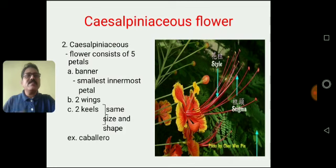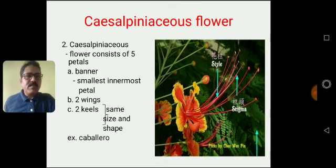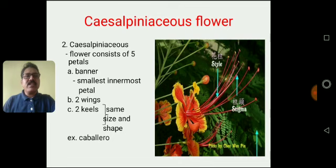The Caesalpiniaceous flower has a structure as shown in this figure. Caesalpinia pulcherrima is an example of this flower, having five petals — the big one is called the banner, two wings, and two small petals called keels. This type of flower is generally found in the family Caesalpiniaceae.